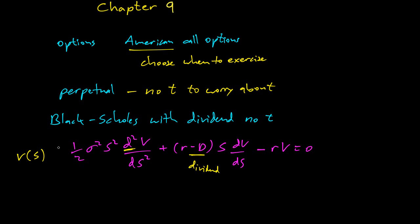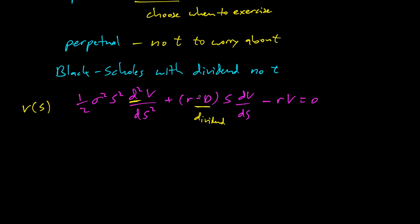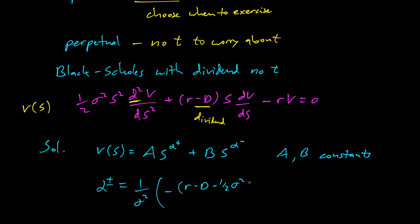And some of the other equations of Black-Scholes, we had some other partial of v with respect to t or v with respect to s times dt, and all that's gone away now. So all right, what's the solution? So I'm not going to work out the solution, but there is one. So the solution is that v of s equals A s to the alpha plus plus B s to the alpha minus. And A and B are some constants. And then the alpha plus or minus is one over sigma squared negative r minus d minus a half sigma squared plus or minus square root of r minus d minus a half sigma squared plus two r minus a half sigma squared.